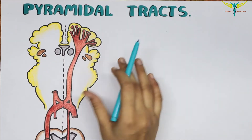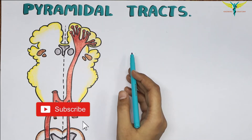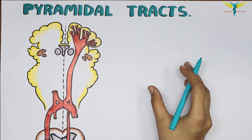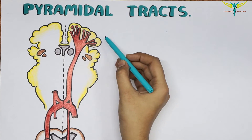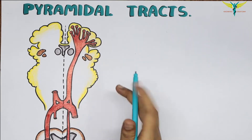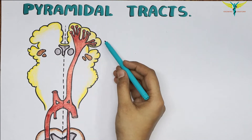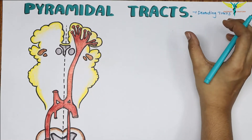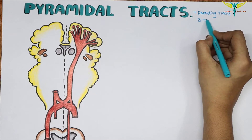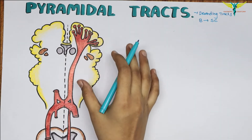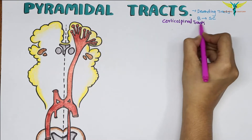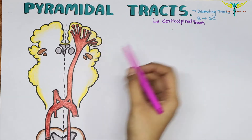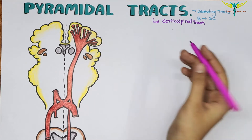The pyramidal tracts are one of the descending tracts of the spinal cord. These descending tracts are formed by motor nerve fibers that arise from the brain and descend into the spinal cord, carrying motor impulses from the brain to the spinal cord. The pyramidal tracts are also called the corticospinal tracts, and they were the first tracts to be found in humans. They are concerned with the voluntary motor activities of the body.